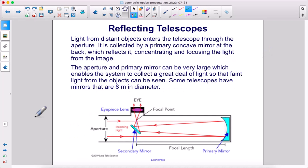Light from distant objects enters the telescope through the aperture. It's collected by a primary concave mirror at the back, which reflects it, concentrating and focusing the light from the image. The aperture and primary mirror can be very large, which enables the system to collect a great deal of light so that faint light from the objects can be seen. Some telescopes have mirrors that are 8 meters in diameter.